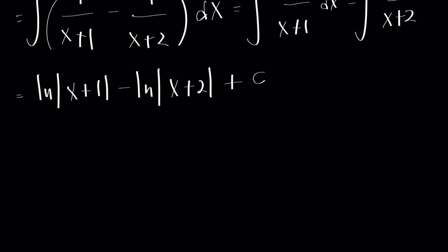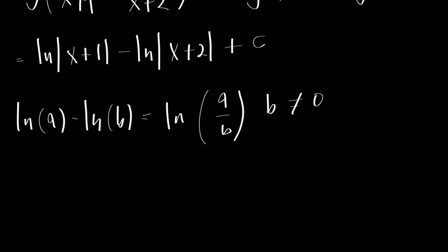And now we can do another technique where we have to recall that the natural log of a minus the natural log of b equals the natural log of a over b, provided that b is non-zero. And here, clearly, x plus 2 is non-zero.